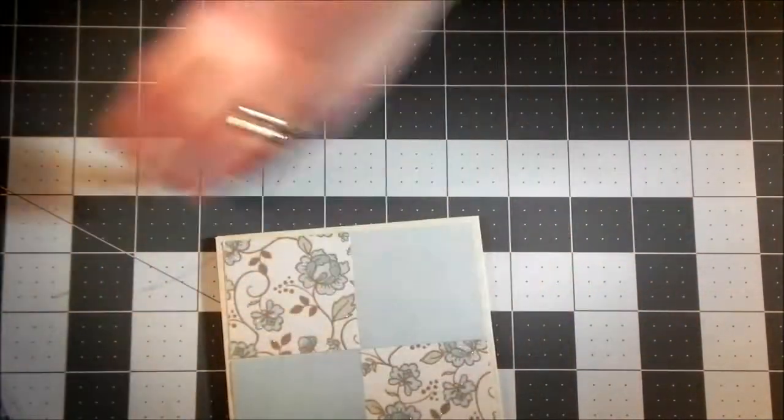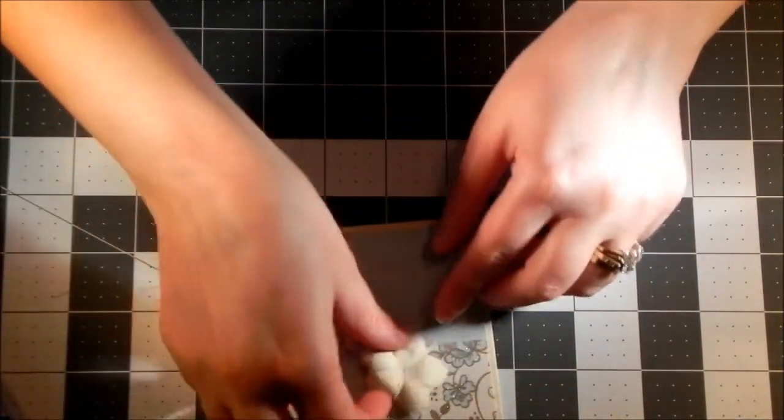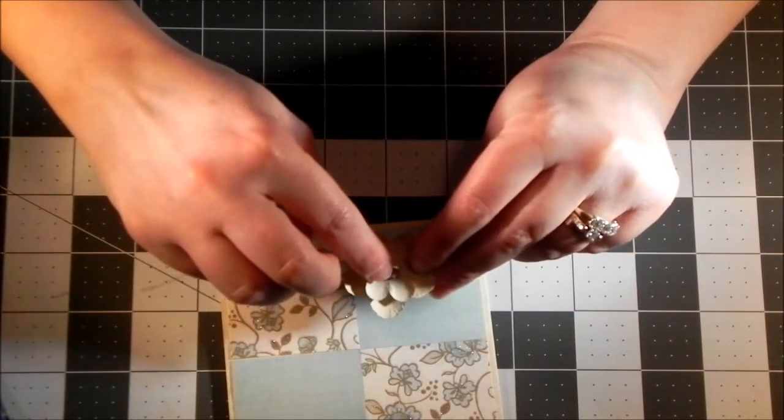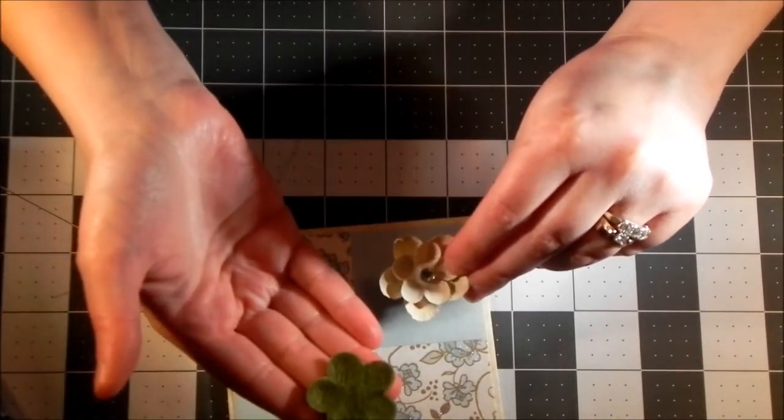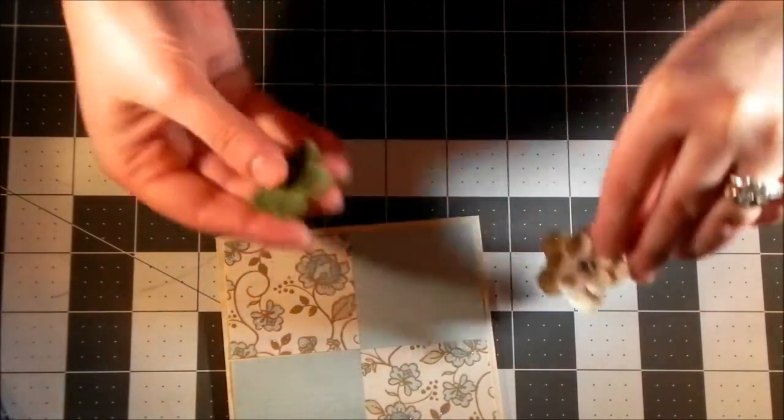Now the embellishments that I've chosen are these tan paper flowers with a little piece of bling, and I'm going to mount those on green felt flowers using my hot glue gun.